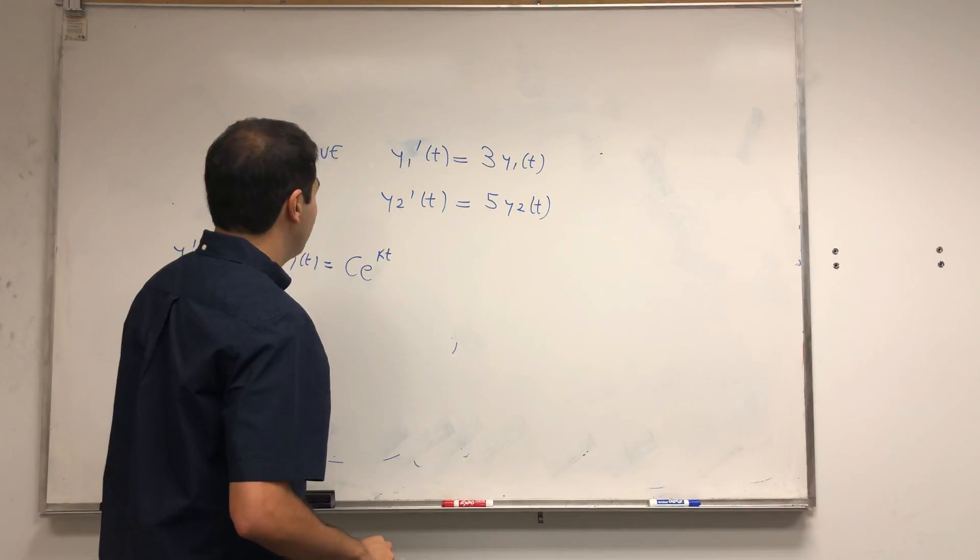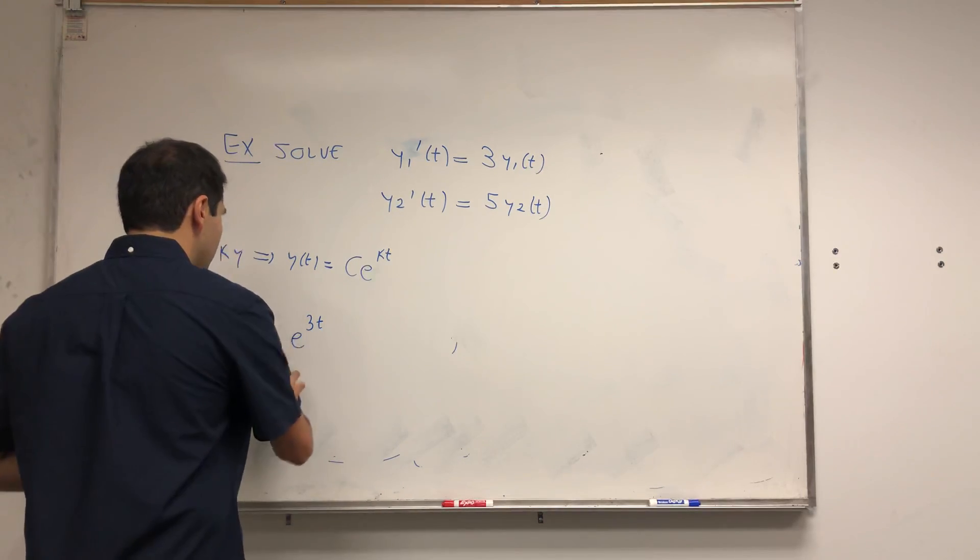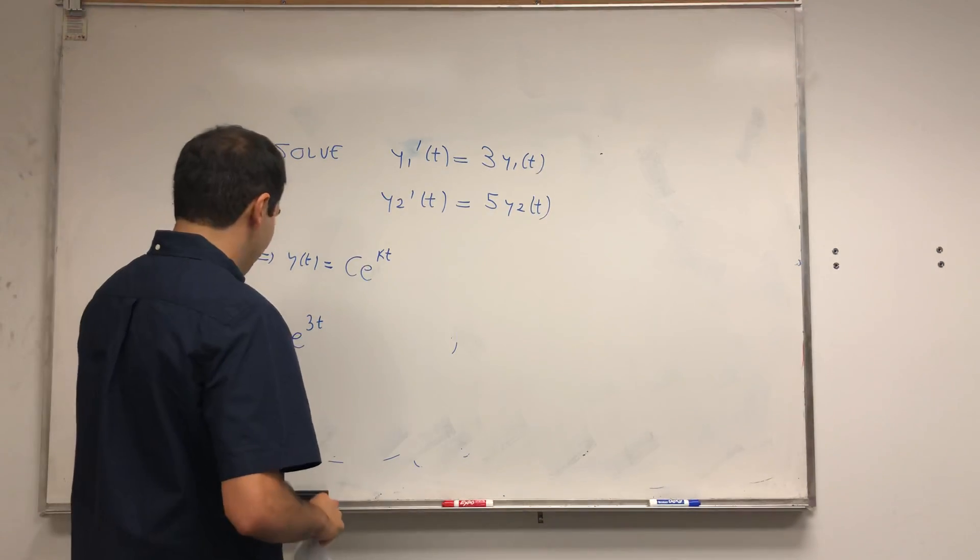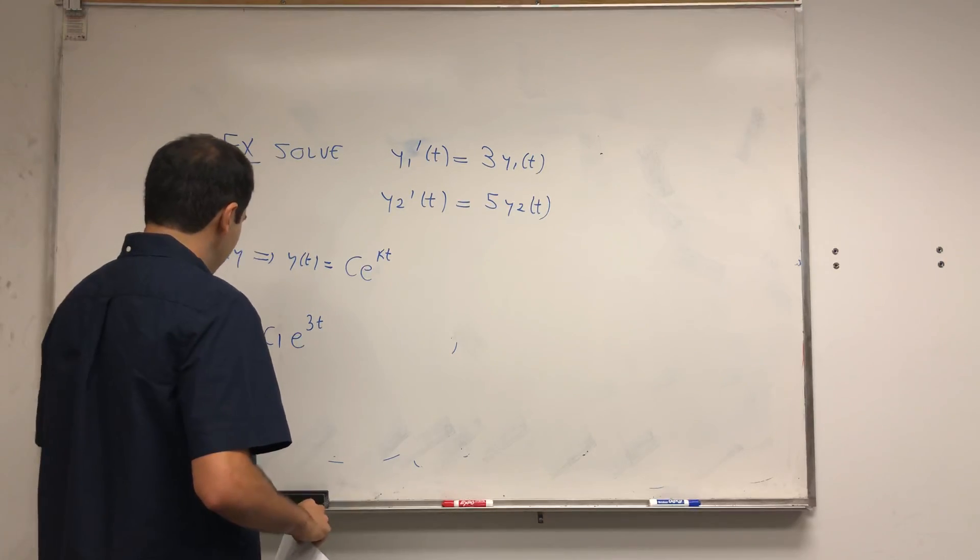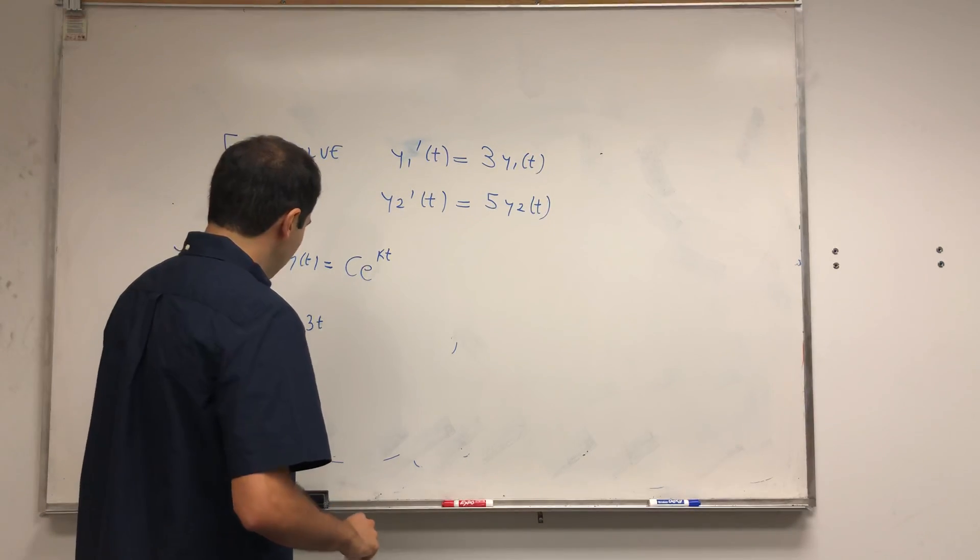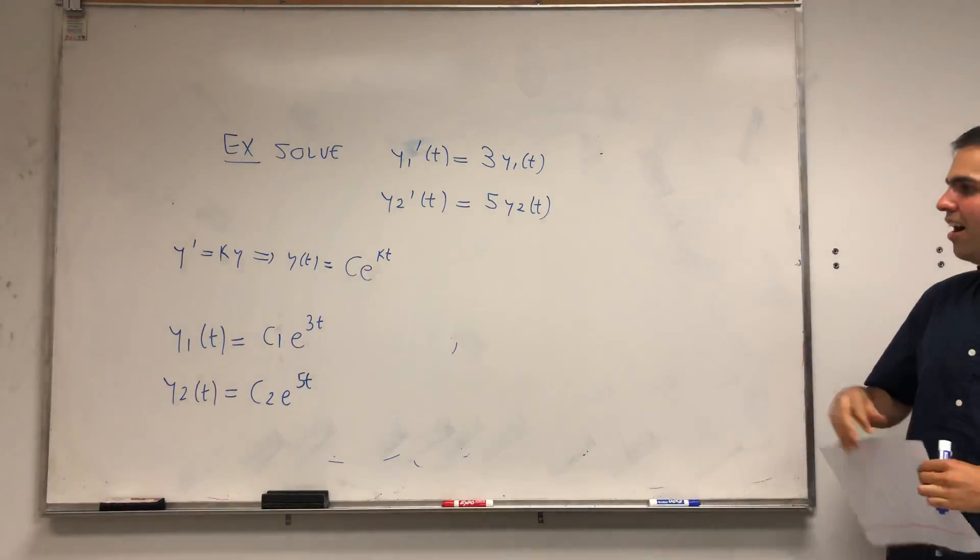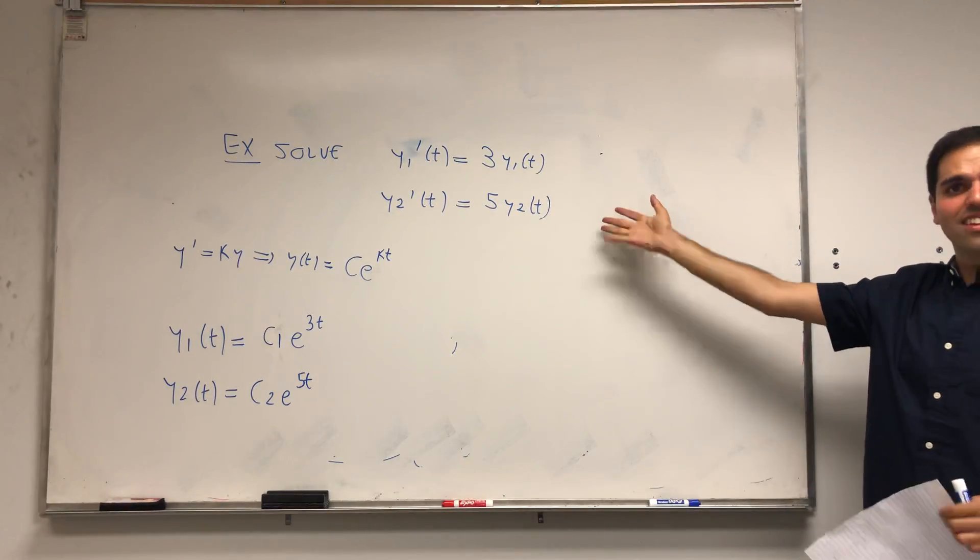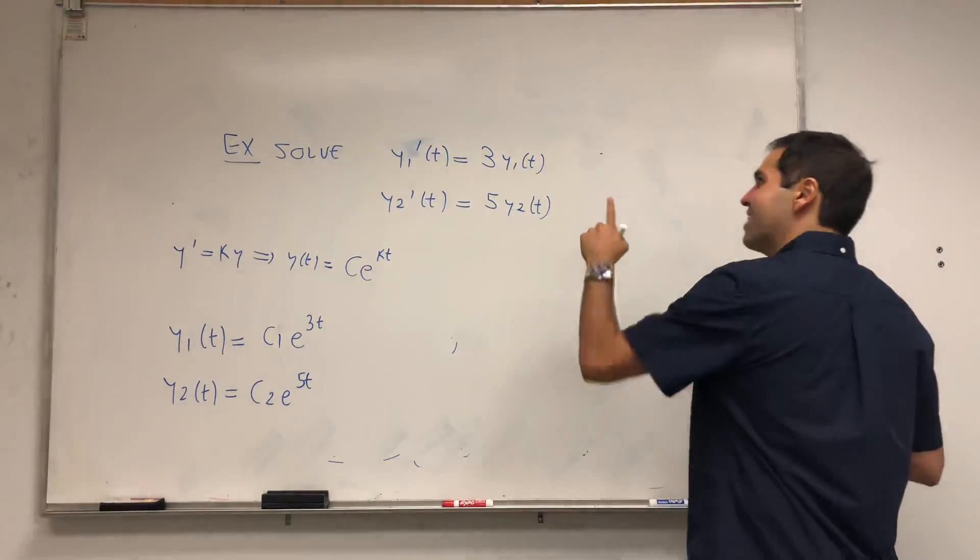In this case, what we get is y1 of t equals c1 e to the 3t, and y2 of t equals c2 e to the 5t. This is all good, and you may say why did I waste your time with that. I'm making the same point.